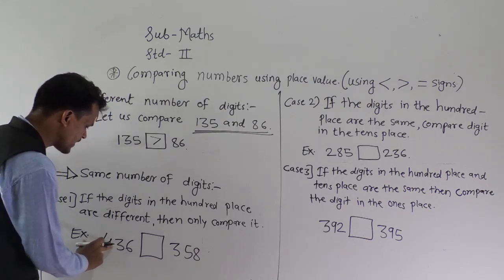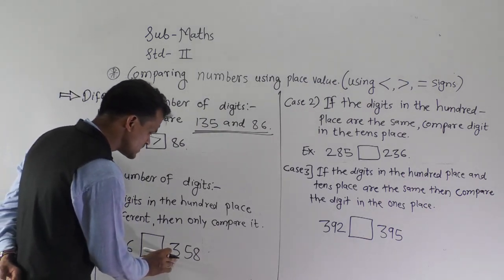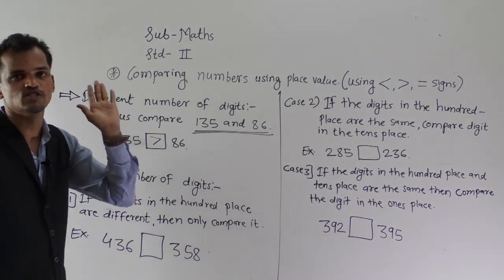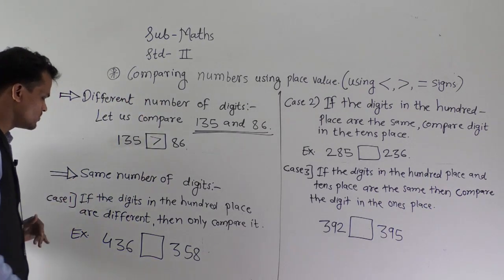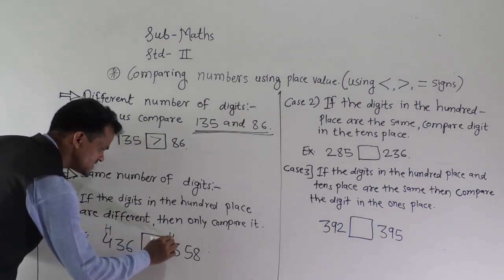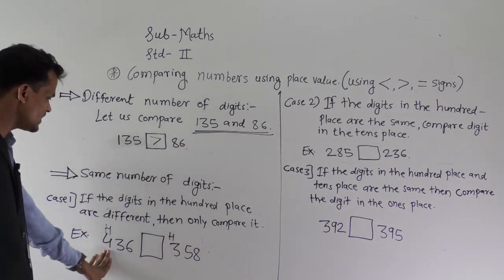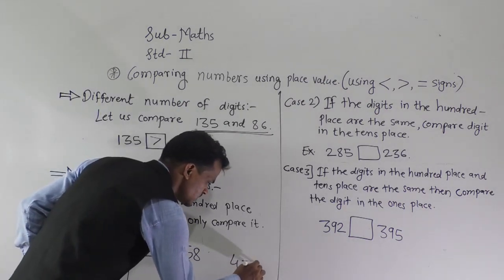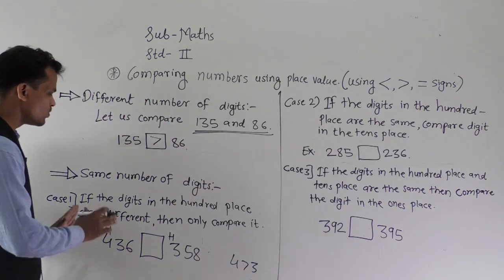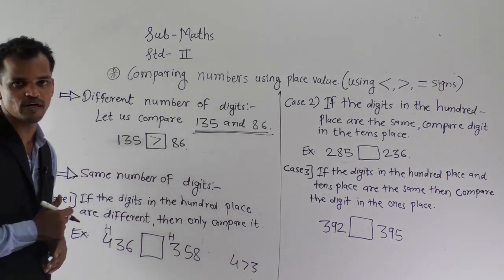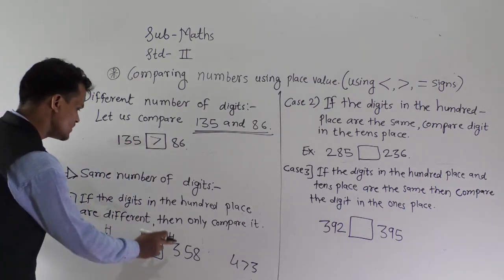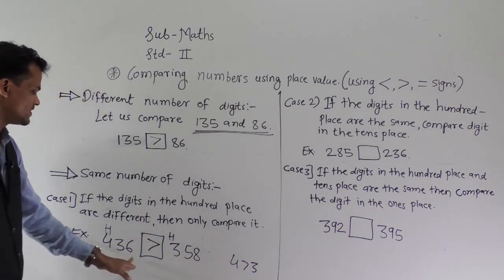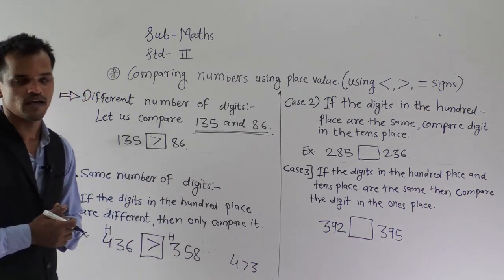Let's compare 436 and 358. We are comparing which number is bigger and which is smaller. We can observe here the 100s place digit is different — here 4 is there and here 3 is there. Since 4 is greater than 3, and the 100s place digit is different, we compare only those: 436 is greater than 358.